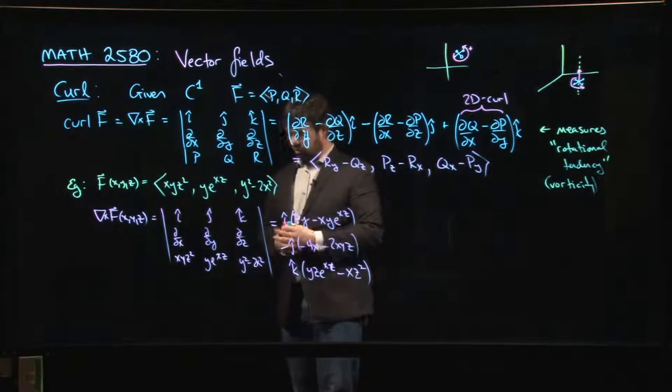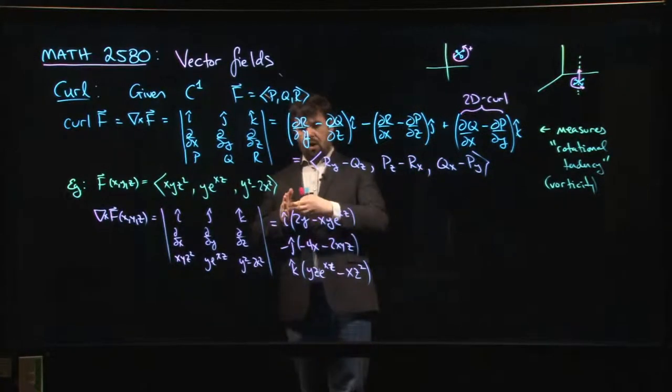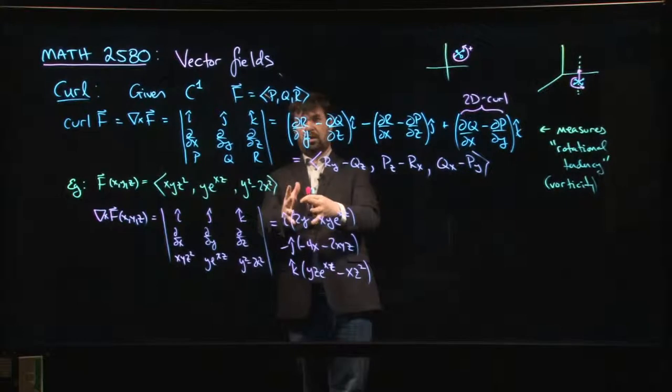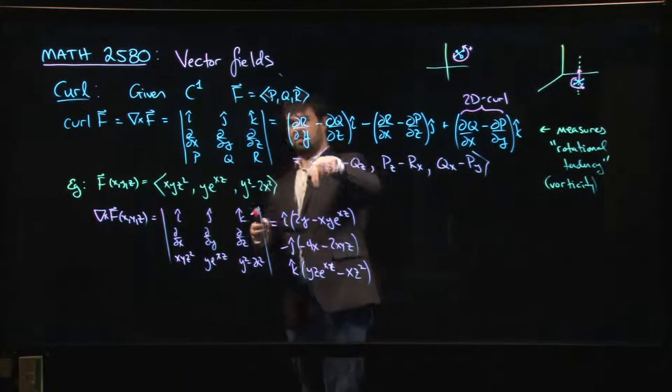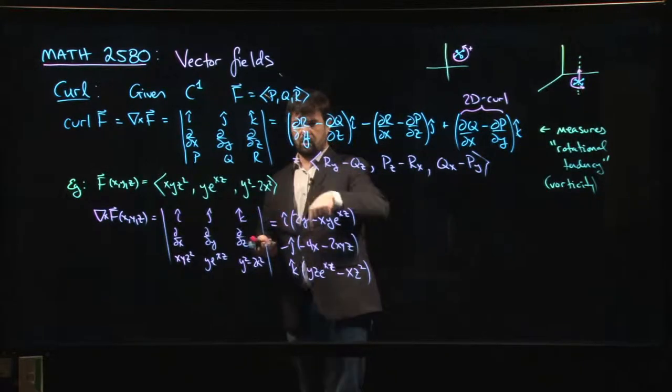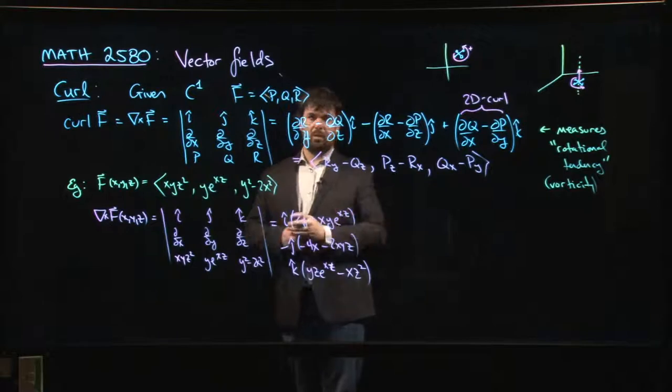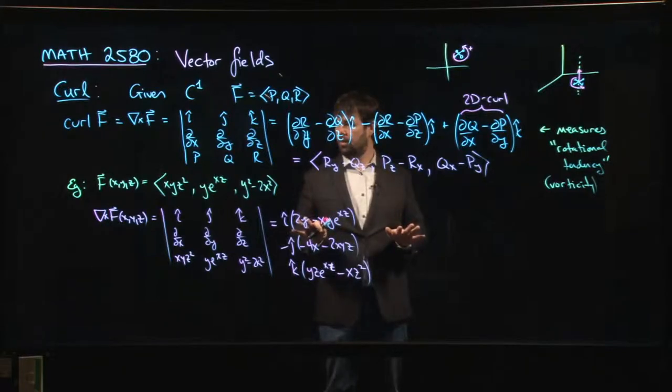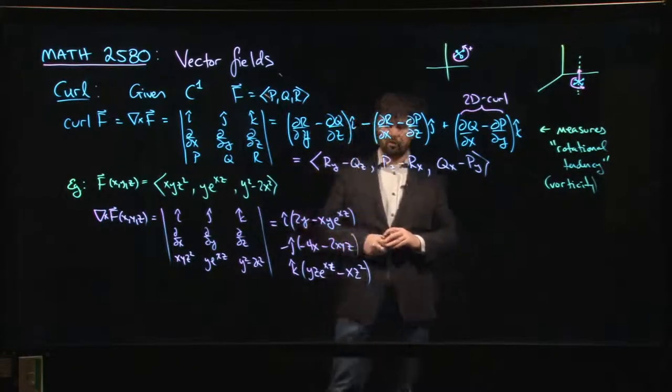Which is somehow almost orthogonal to the notion of divergence, right? Divergence is measuring whether things are sort of spreading out or contracting. Curl is measuring whether you're just kind of going around in circles, right? You're neither expanding nor contracting. You're just going around and around and around. So that's one way to think about these two measures of a vector field. So I think we'll leave it at this for now. We are going to come back. We're going to look at some other examples.